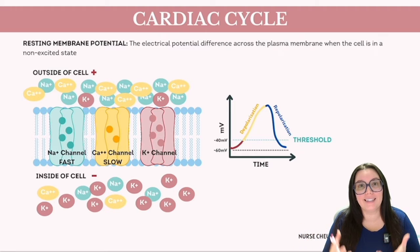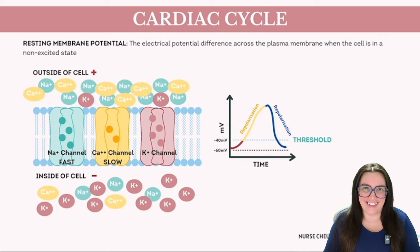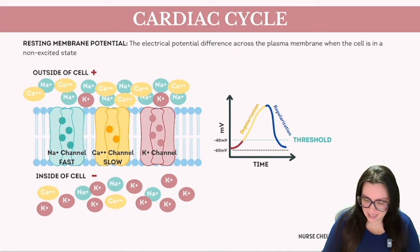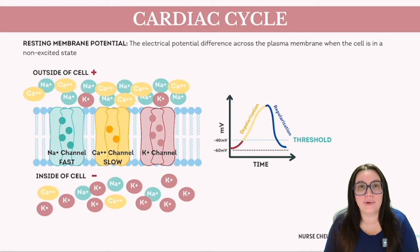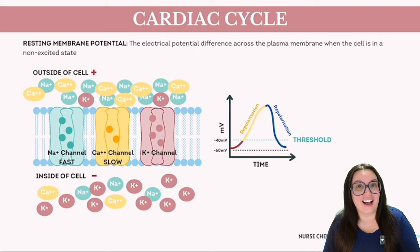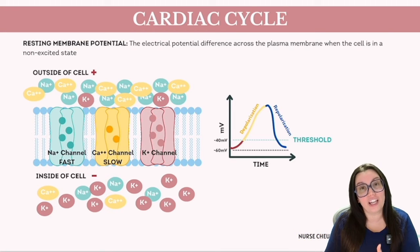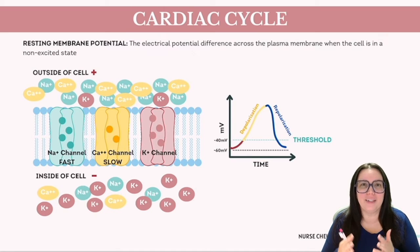During the resting phase, cells maintain specific ion concentration gradients: sodium and calcium ions are predominantly outside the cell, while potassium ions are more abundant inside. Various pumps actively transport sodium and calcium out of the cell and potassium ions in to sustain these gradients. An action potential is a temporary reversal of the cell membrane's electrical polarity, triggering voltage-gated ion channels that open or close in response to changes in membrane voltage.